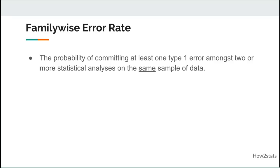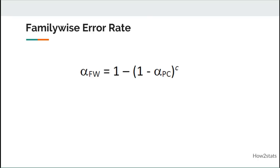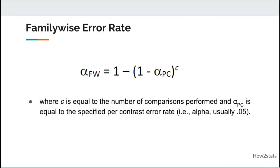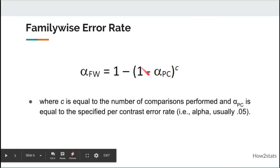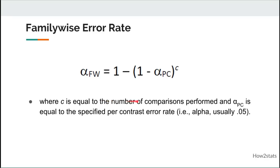The probability of committing at least one type 1 error amongst two or more statistical analyses on the same sample of data is equal to the family-wise error rate. The formula used to calculate it is: 1 minus (1 minus alpha per comparison) raised to the power of C, where C is the number of comparisons performed.